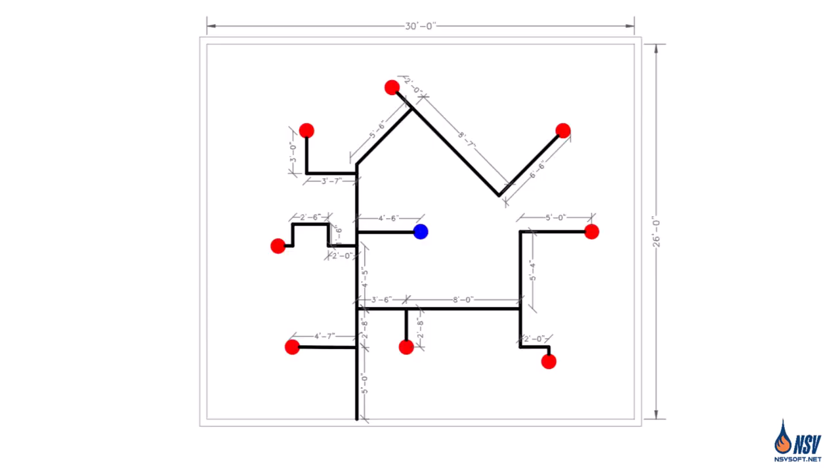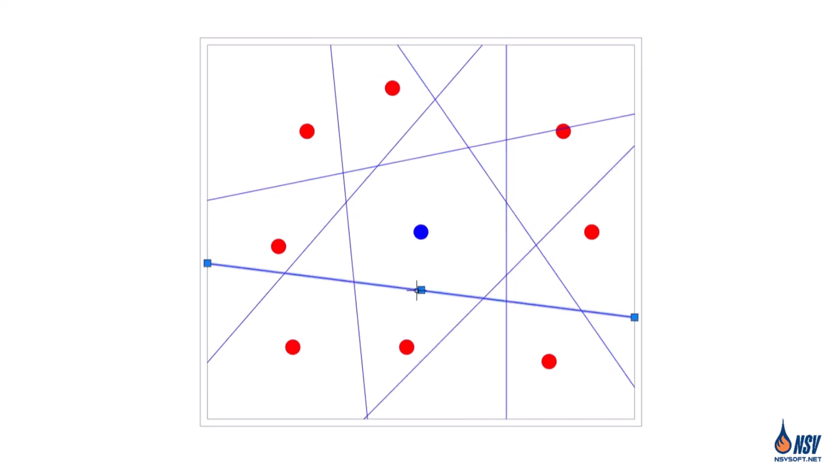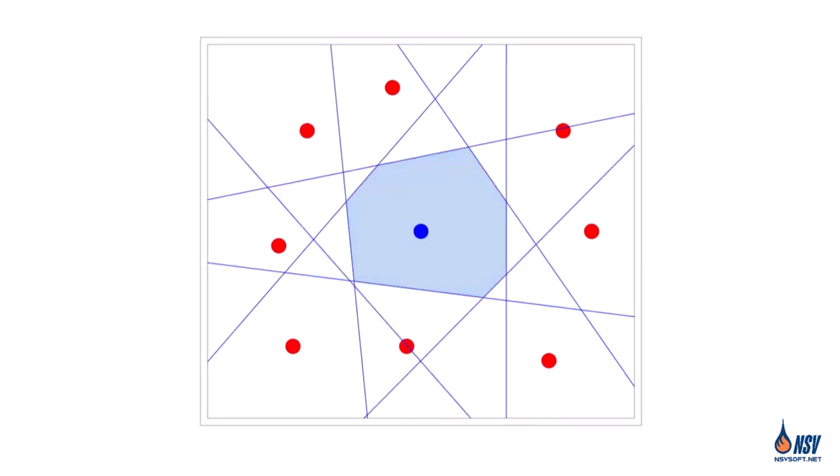In the third example, the sprinklers are spaced non-uniformly, making the S by L method challenging to apply. Therefore, we'll use the sketch-based method to determine the blue sprinkler's coverage area. As we explained earlier, we'll first ignore the piping, and then find the area the blue sprinkler covers by drawing perpendicular bisectors. As you can see, the blue sprinkler's coverage area is definitely not a rectangle, so we need to find its bounding box.